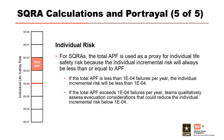For semi-quantitative risk assessments, individual risk is estimated using APF as a proxy. The individual life safety risk will always be less than or equal to the APF, so using the APF is a conservative but reasonable estimate. The individual life safety risk is plotted on a simple matrix.